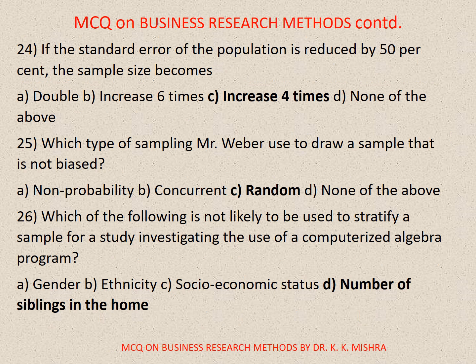Question number 24. If the standard error of the population is reduced by 50%, the sample size becomes: A. Double, B. Increased 6 times, C. Increased 4 times, D. None of the above. Correct option is C. Increased 4 times. Question number 25. Which type of sampling did Mr. Weber use to draw a sample that is not biased? Options are: A. Non-probability, B. Concurrent, C. Random, D. None of the above. Correct option is C. Random.